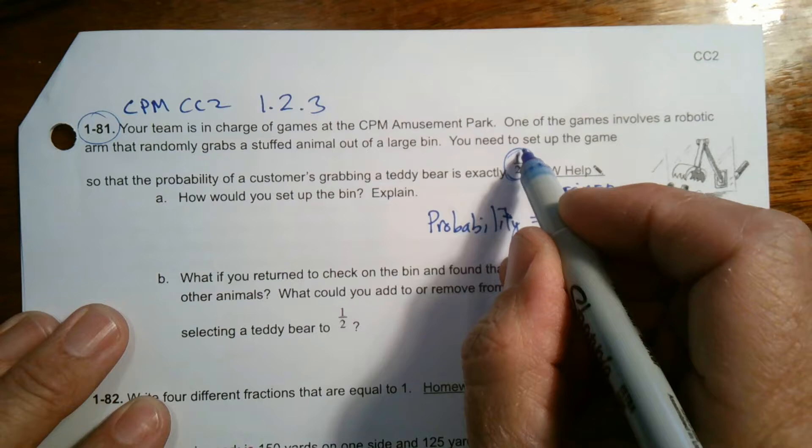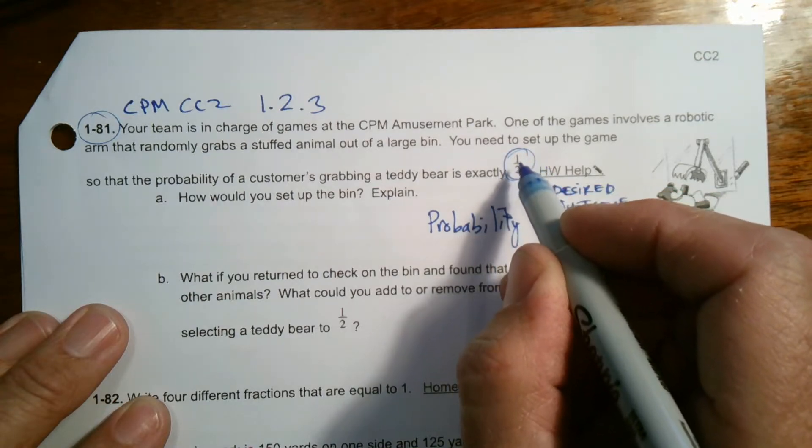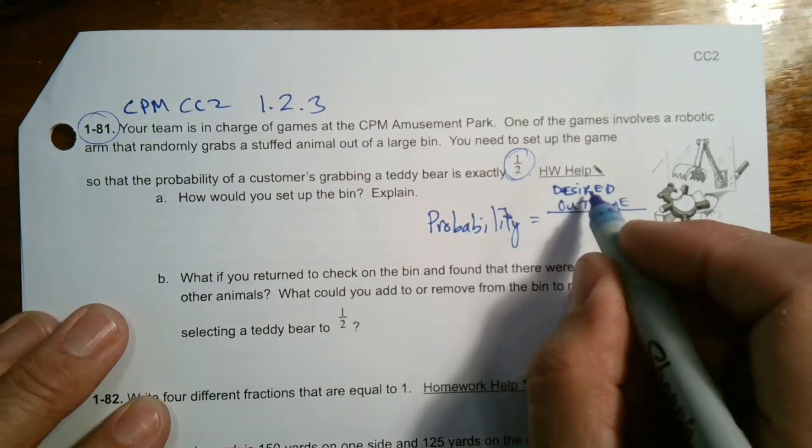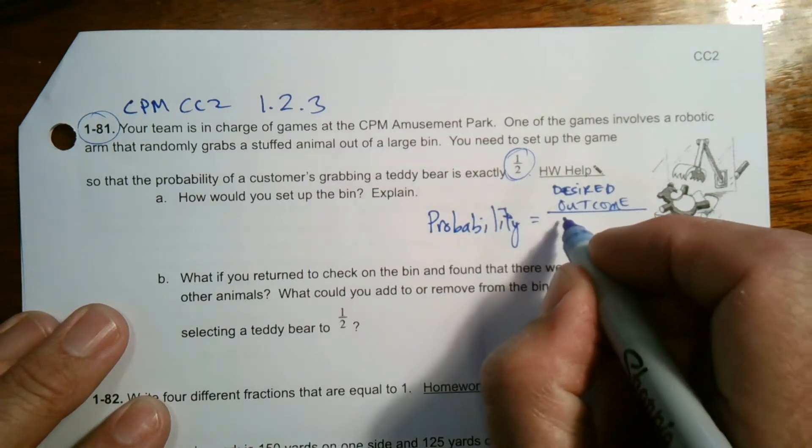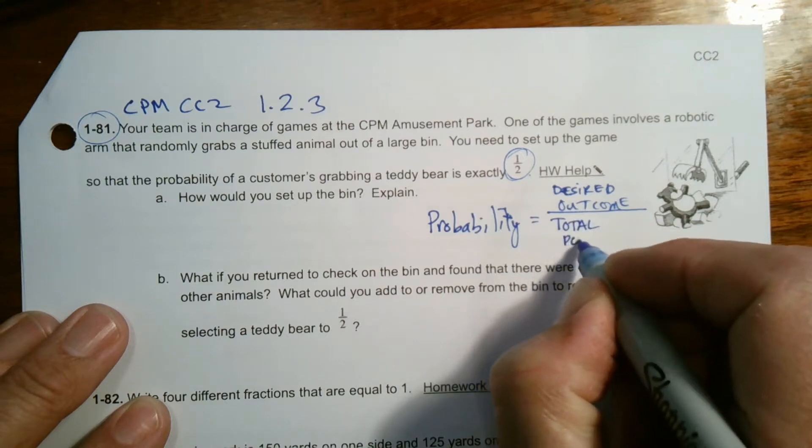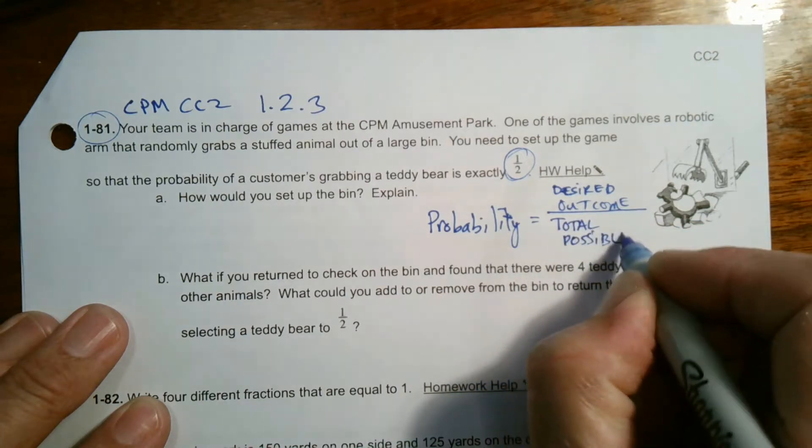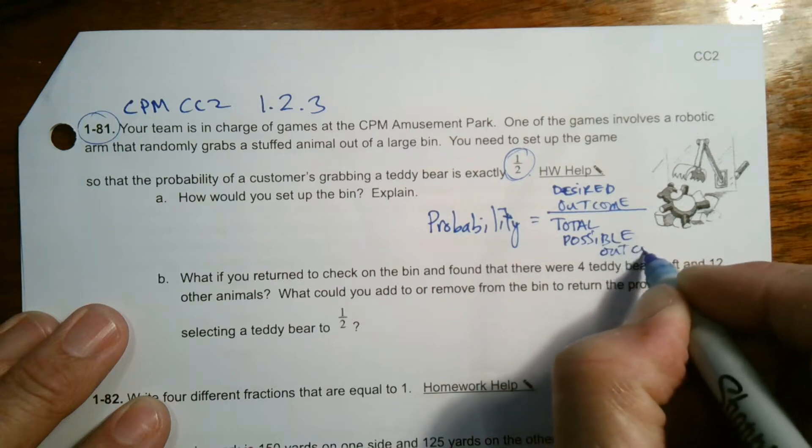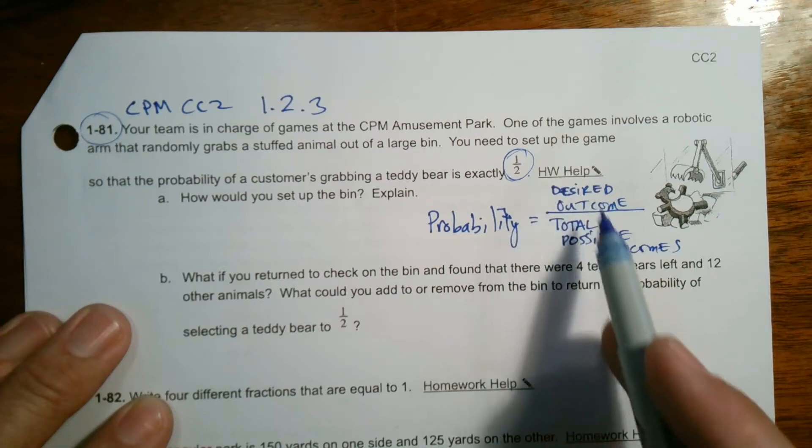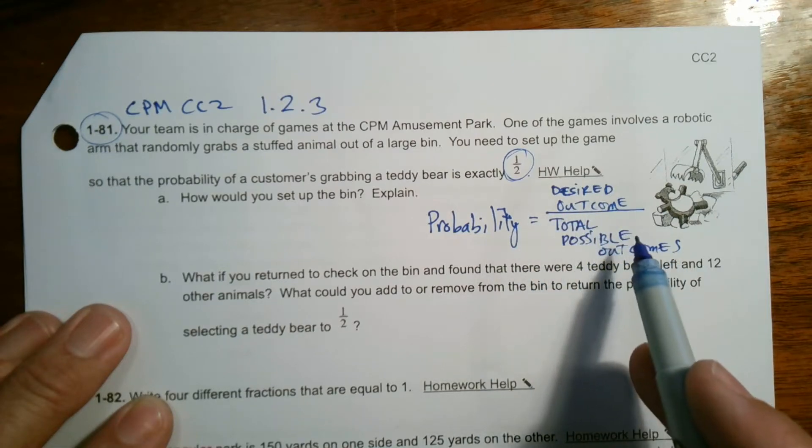So the desired outcome in this case is you want to have one teddy bear out of two of the stuffed animals. The desired outcome is the one teddy bear out of what? The bottom is the total possible outcomes. So that's probability: desired outcome over total possible outcome.